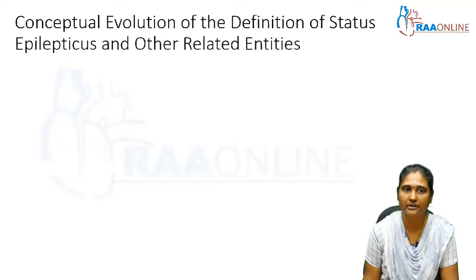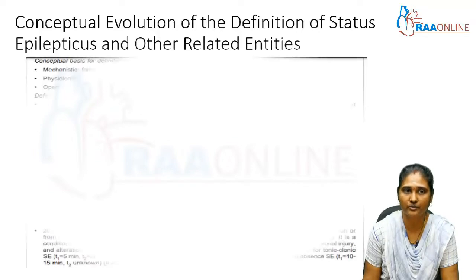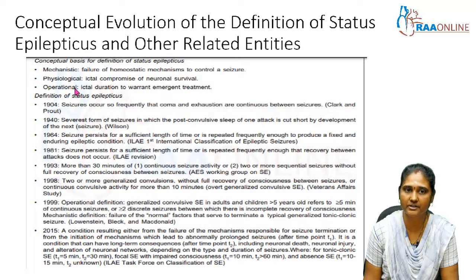Coming to the definition of status epilepticus, over a period of time many definitions have conceptually evolved. The mechanistic definition describes it as a failure of homeostatic mechanisms to control the seizure. Physiologically, it involves a compromise of neuronal survival. The operational classification defines it as a condition of sufficient duration warranting emergency treatment.